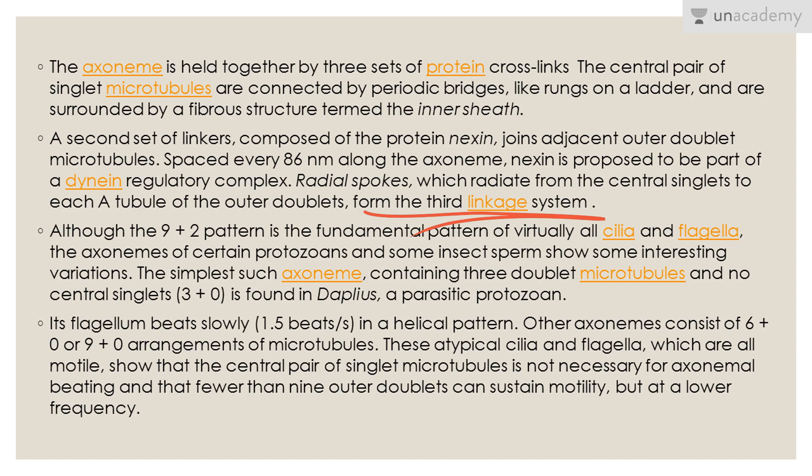Although the nine-plus-two pattern is fundamental to virtually all cilia and flagella, axonemes of certain protozoans and insect sperm show interesting variations. The simplest axoneme, containing three doublet microtubules and no central singlets — a three-plus-zero arrangement — is found in Dapluis, a parasitic protozoan, whose flagellum beats slowly in a helical pattern. Six-plus-zero and nine-plus-zero arrangements are also possible. These atypical cilia show that the central pair of singlets is not necessary for axonemal beating, and that fewer than nine outer doublets can sustain motility, but at a lower frequency.